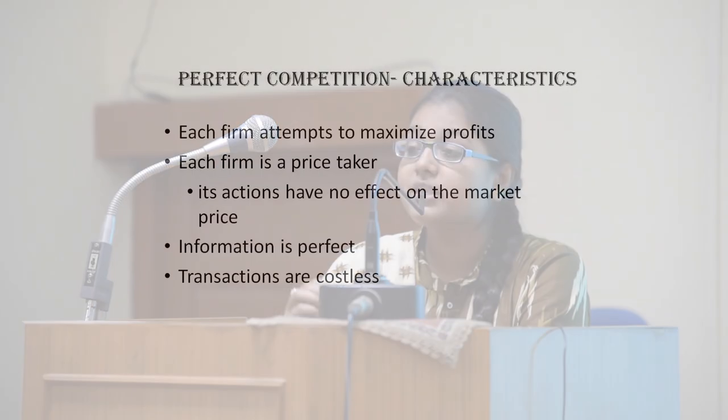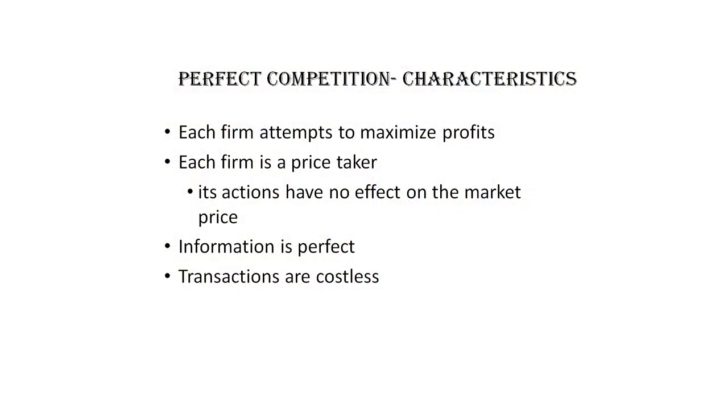Each firm produces to maximize profits — any producer wants to gain maximum output from what they put in as input. So the objective of firms in perfect competition is to maximize profit. As stated earlier, each firm is a price taker. When demand and supply intersect, the equilibrium price is determined by the industry, and that price cannot be changed by any individual producer or seller in perfect competition.